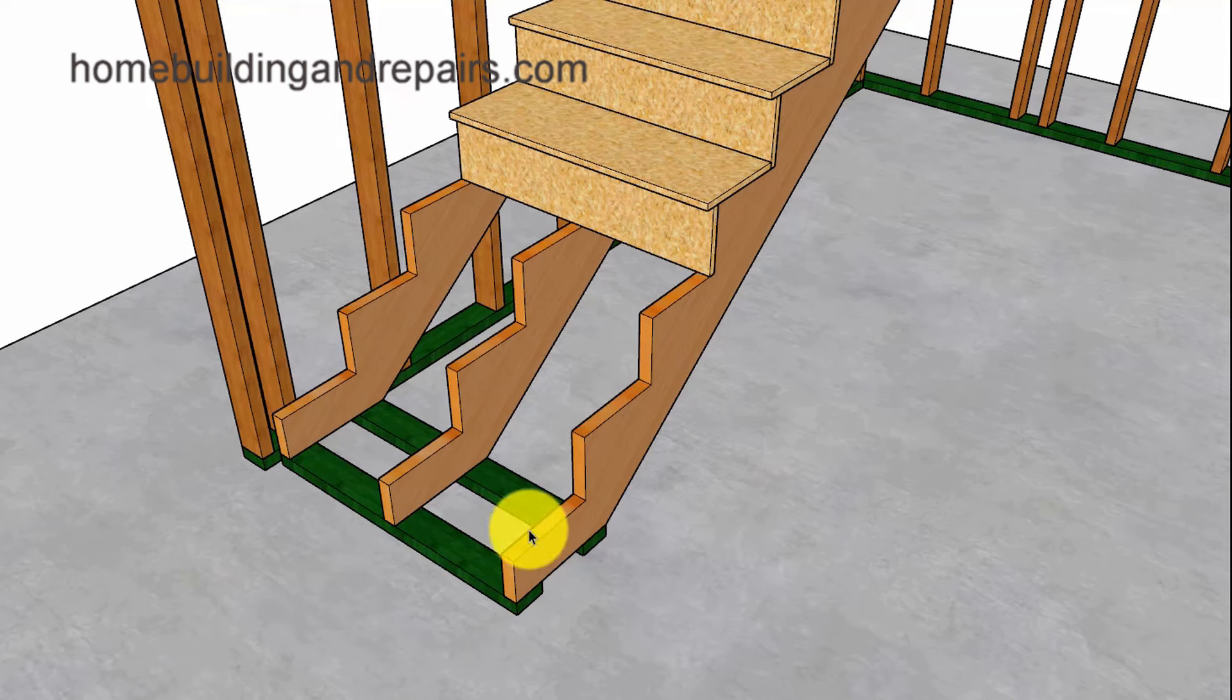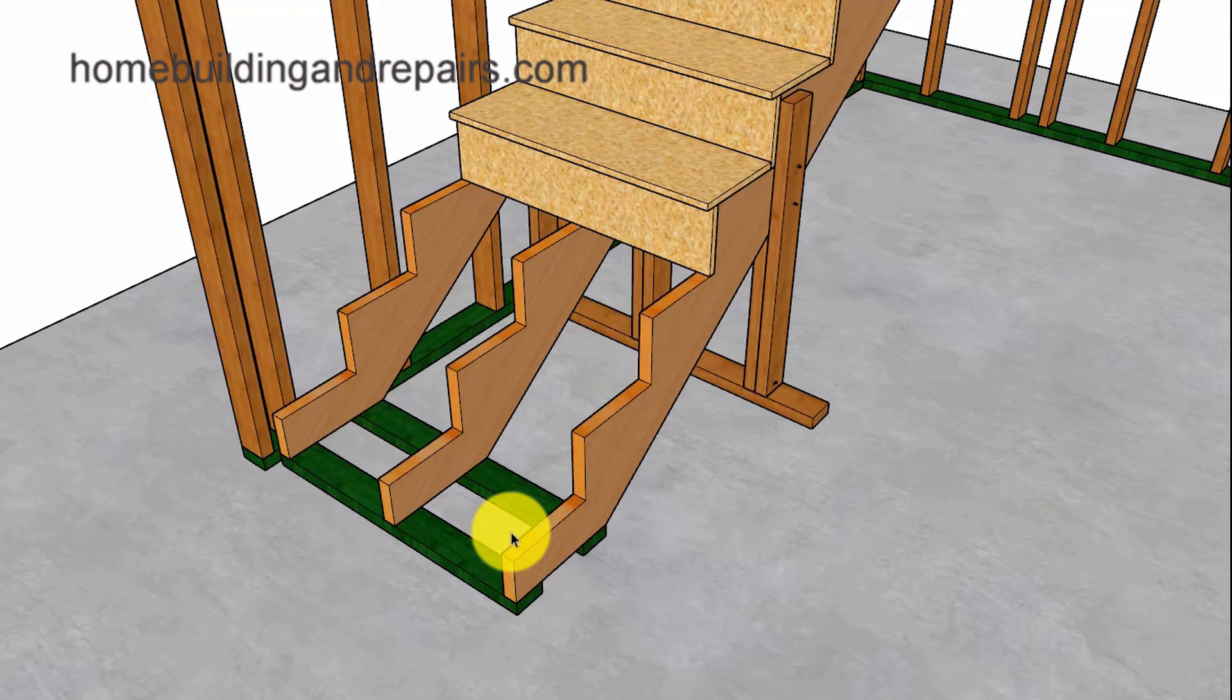So the first thing I want to do is remove the first three risers and treads and then I will provide you with two ways to support the stairway because we are going to be removing part of the stair stringers and in reality you might not need to do anything to this stair stringer here or even this stair stringer here.